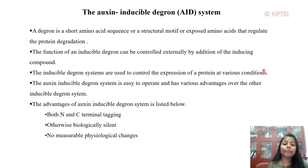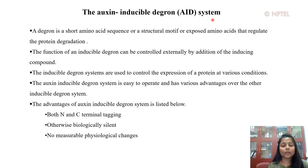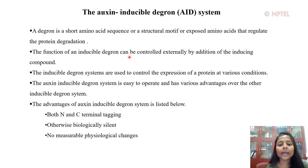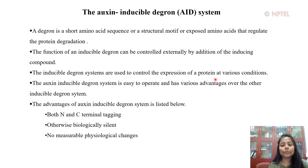Depending on the mechanism of action of auxin hormone in the plant cell, a technique has been standardized to eliminate a protein of interest from an experimental model system. This technique is referred to as the auxin-inducible degron (AID) system. A degron is a short amino acid sequence, structural motif, or exposed amino acids that regulate protein degradation; it is a part of the protein itself. The function of an inducible degron can be controlled externally by addition of the inducing compound — in this case, auxin. The auxin-inducible degron system is easy to operate and has various advantages over other inducible degron systems, such as the n-end rule degron.